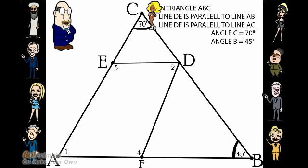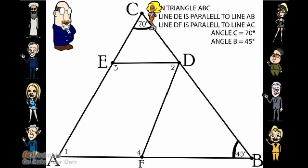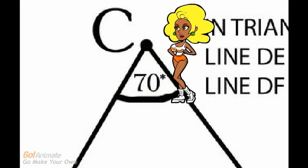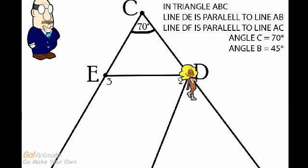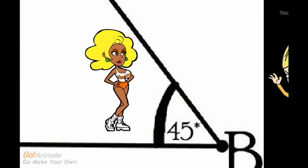Right, very well done. Tammy, show the class those angles while we find our next question. This is angle C and it is pre-marked as 70 degrees. This is angle B and it measures 45 degrees.